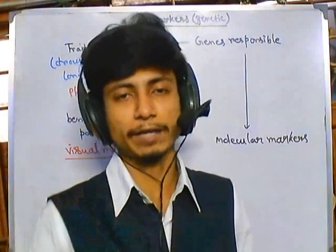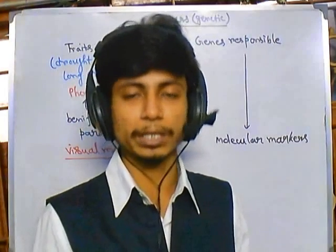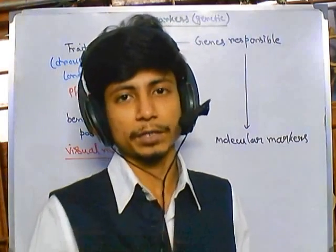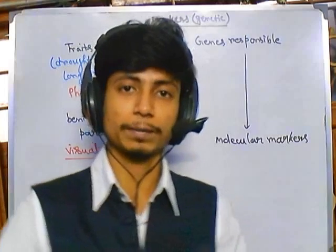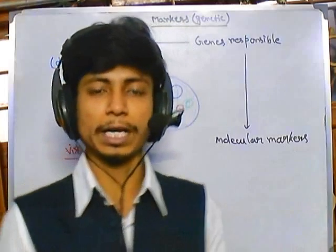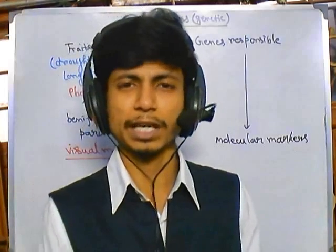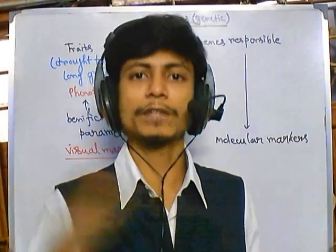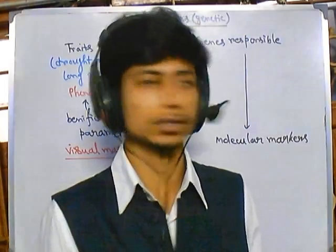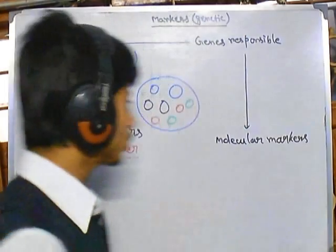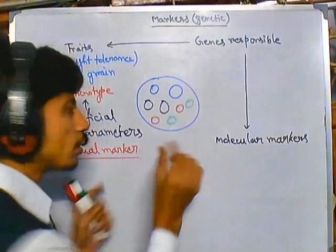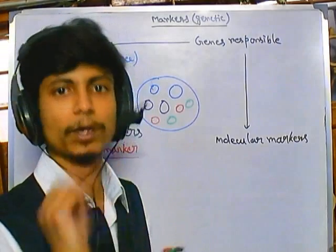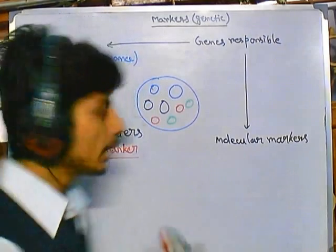Genetic modification, which provides GMO foods, can give drastically very high results, but usually the results don't last after two or three generations. There are a lot of ethical and economic issues regarding GMO foods. So the focus here is on figuring out which marker is responsible for a trait.